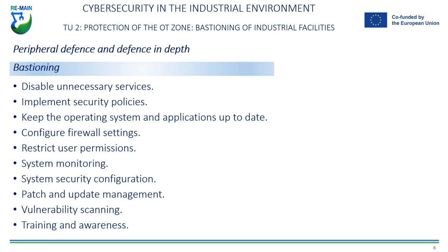Keeping the operating system and applications up to date is important. The operating system and installed applications should be kept current with security updates to ensure that known vulnerabilities are patched. Firewall configuration: a firewall can be used to control incoming and outgoing network traffic by blocking access to certain ports and protocols that are not necessary.